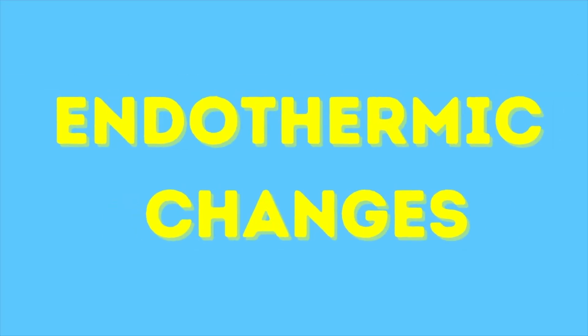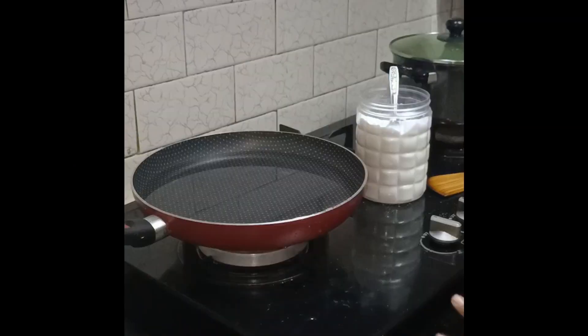Evaporation is an example of an endothermic change. In this reaction, heat from the sun is absorbed by the water molecules and they are changed to water vapor. Though evaporation is a natural change, this can be done at home under adult guidance. Today, I am going to show an experiment.